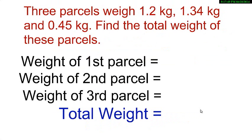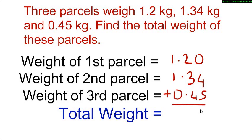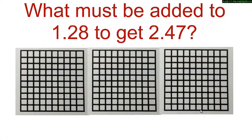Now, you can also work this problem by physically adding all the weights. That is 1.2. You will write it as 1.20 so that all the decimals are like decimals. The second weight is 1.34 and the third weight is 0.45. So, adding the 3 weights we get 2.99 kgs. Let us consider another problem.